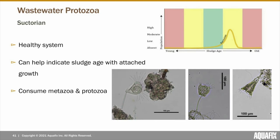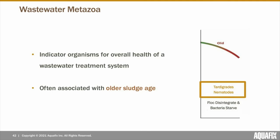Some stalk ciliates also have the ability to separate from their stalk and swim freely to avoid unfavorable conditions. If suctorins are observed in your wastewater plant, they're an indication of a healthy activated sludge system. If attached growths are developing on the stalk of a suctorin, it can act as a gauge for the sludge age — similar to stalk ciliate colonies, the more attached growths, the older the sludge age. Suctorins come in many shapes and sizes but all have tentacles used to capture and consume metazoa or protozoa. However, if their tentacles are observed scrunched up, it's an indication of high levels of ammonia.